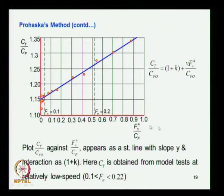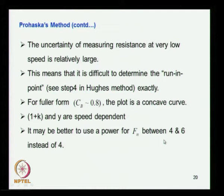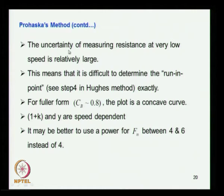The uncertainty of measuring resistance at very low speed is relatively large because the resistance values vary very small. When you try to measure a small value, even a slight deviation in measurement leads to a large error. So one has to be very careful — that is why there is uncertainty in measurement of resistance at low speed. This makes it difficult to determine the run-in point on the resistance curve.